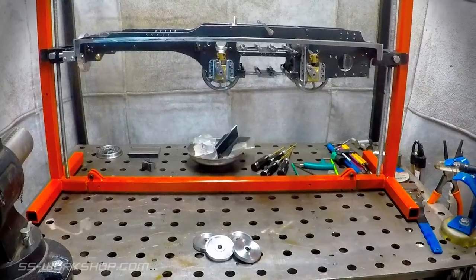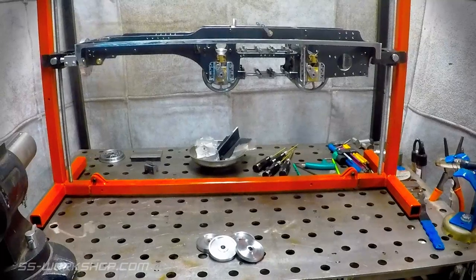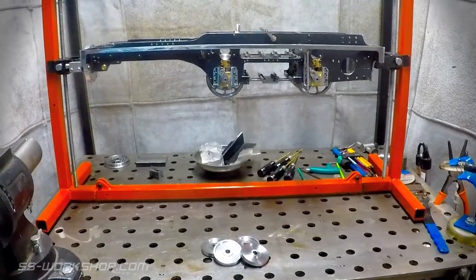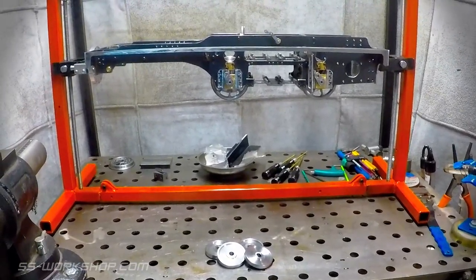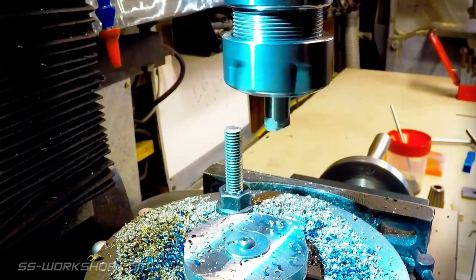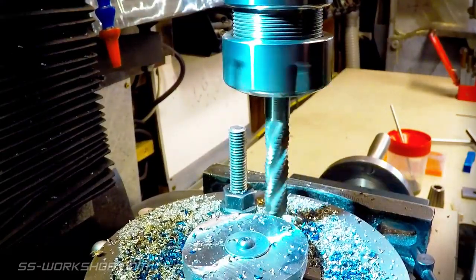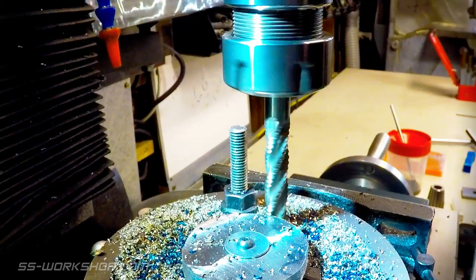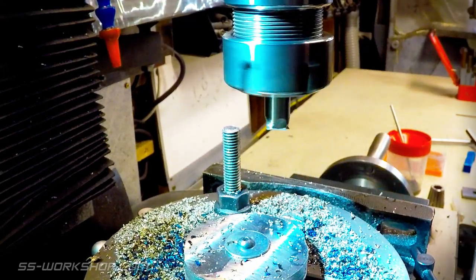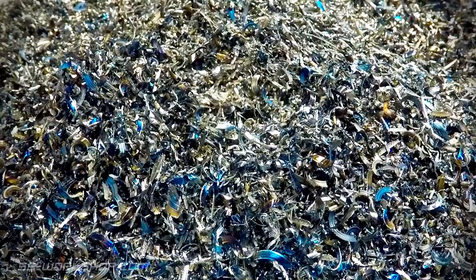I've had comments that I make things look easy to build in these videos. Just to show you things don't always go my way, when I was cutting the first of these wheels I had a little setback. Did you catch that? Hang on we'll rewind and watch that one again in slow motion. My part wasn't well enough secured and rotated breaking the end mill. Oh well these things happen.